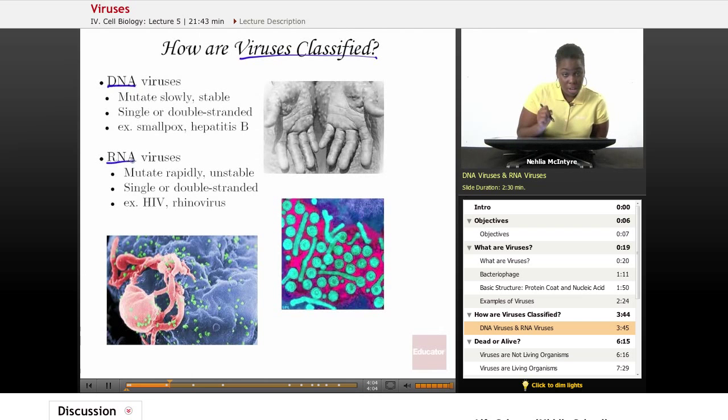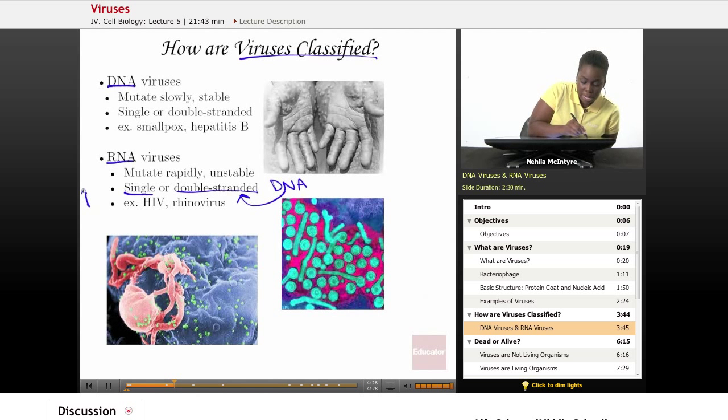There are some similarities to these types of viruses, and then there are some differences. The similarity is that inside of that protein coat, both the DNA and the RNA viruses can be single-stranded or double-stranded, meaning inside you have that DNA, and DNA is double-stranded, and then the RNA is single-stranded. Both of them share that characteristic, but the RNA could be single or double, and the DNA could be single or double.